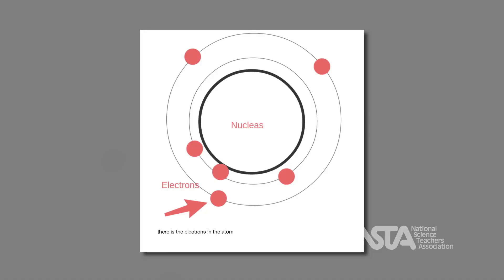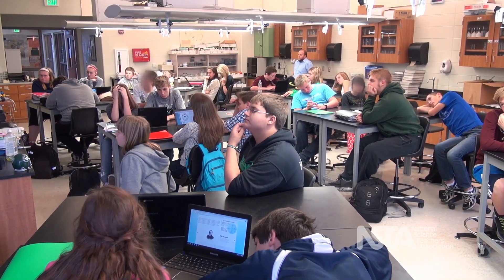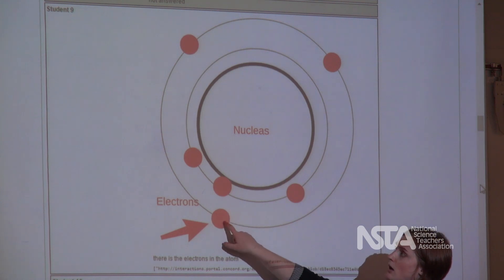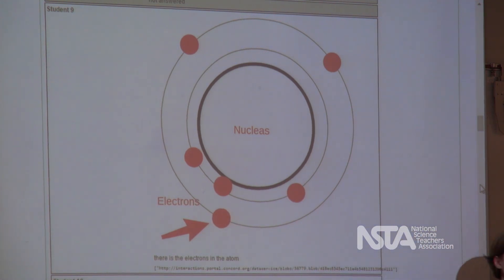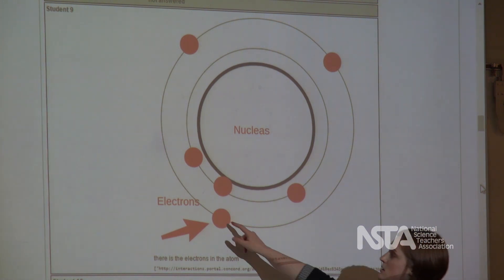So what do we think? Does this model match with the evidence? So what's it showing? We have the electrons labeled — they are smaller. Is it showing that they're negative? No. So maybe we could add a little bit more information here to indicate they're negatively charged.